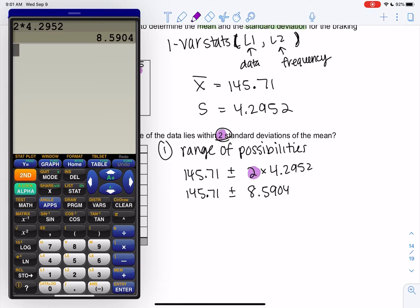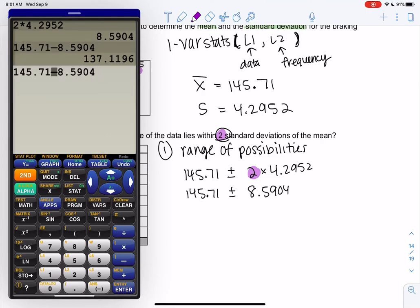So we're going to do two times the standard deviation. 145.71 plus or minus 8.5904, right? We were doubling the standard deviation. I will, in the next section, we'll figure out why we're doing this. Right now we're just kind of practicing the math. So we'll subtract. I always do subtraction first. It just makes more sense. And then we'll add. So these are my range of possibilities.